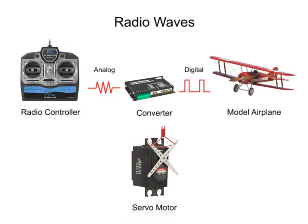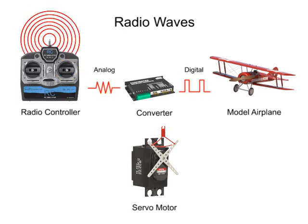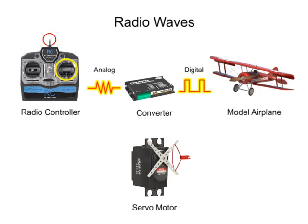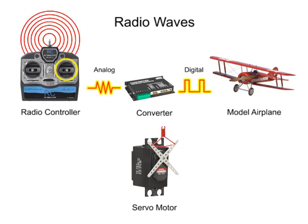The width or duration of the pulses will vary based on the position of the joystick. The control pulses only last a few milliseconds and repeat about 50 times per second. A specific series of impulse signals will hold the servo horn in a fixed position.